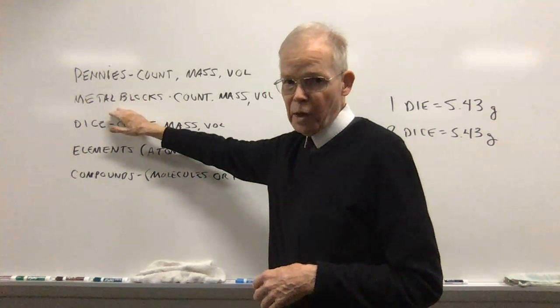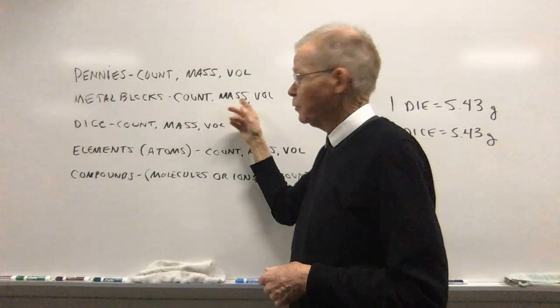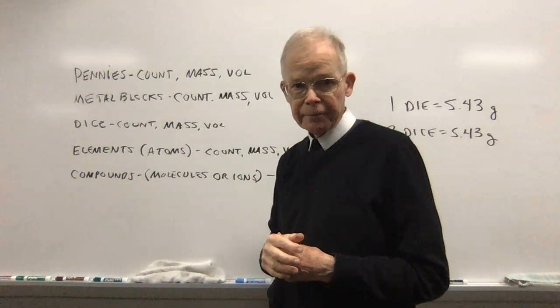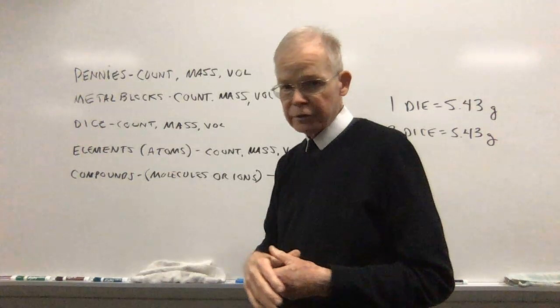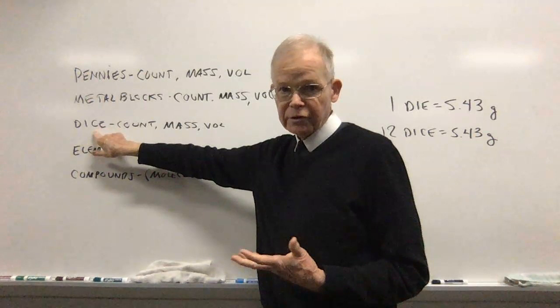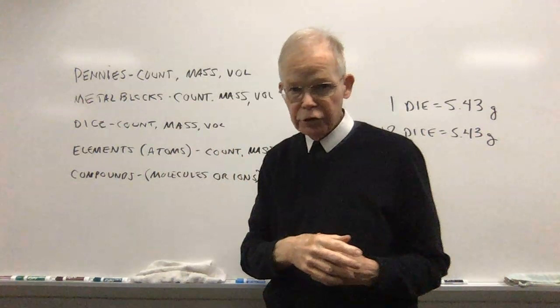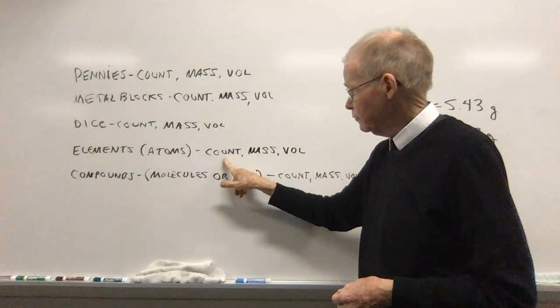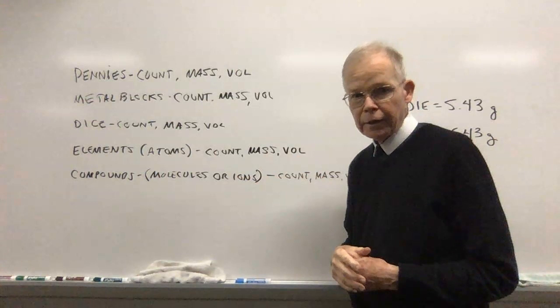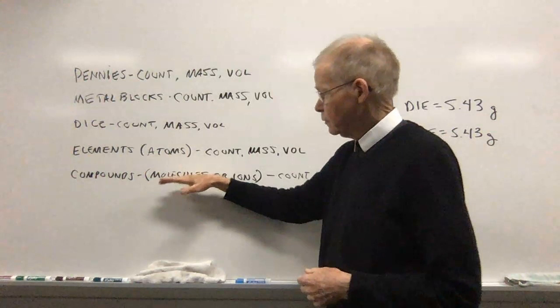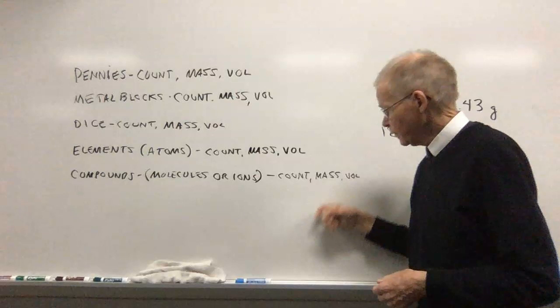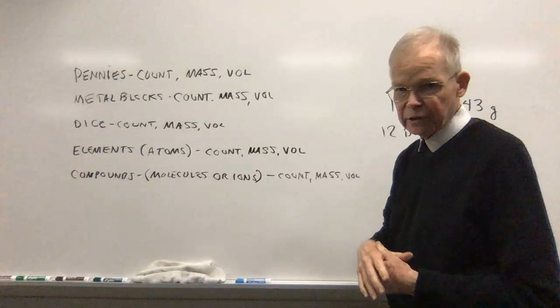The next idea we talked about was the metal blocks. We took only one, massed it, and could also get its volume using a little metric ruler to figure out how big it is. Then we have dice — a bunch of dice. We can count them, get their masses, and get their volume. And then eventually I'll show you some elements made of atoms where we can count them, get their mass, get their volume. The final thing is that we can take compounds, which are molecules or ions combined together — we can count them, mass them, and determine their volume. All of the arrangements of particles here can be measured in the same fashion.